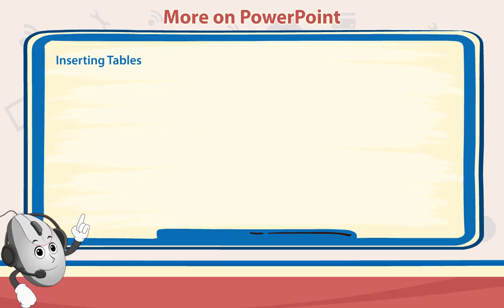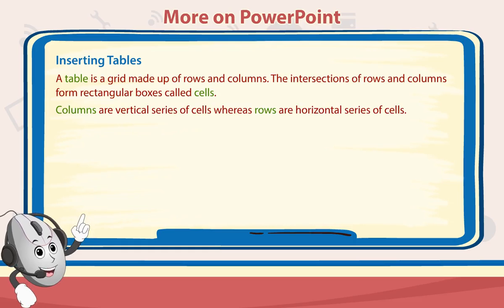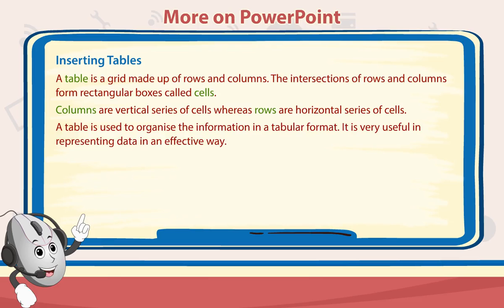A table is a grid made up of rows and columns. The intersections of rows and columns form rectangular boxes called cells. Columns are vertical series of cells whereas rows are horizontal series of cells. A table is used to organize the information in a tabular format, and it is very useful in representing data in an effective way.